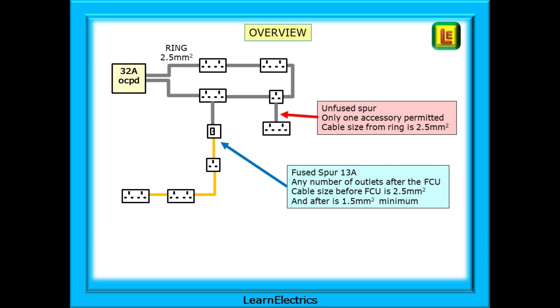Let's have a quick overview of what we've done so far in this video. In our example, a 30 or 32 amp ring circuit should be wired in 2.5 by 1.5 twin and earth. From each accessory that is actually on the ring, we can take an unfused spur to one spurred accessory and one only. The cable size from the ring to the spurred accessory must be the same size as the cables forming the ring, in other words 2.5mm. If we use a fused connection unit, a fused spur at 13 amps, then we can have as many accessories as we need after the FCU. The cable from the ring to the FCU must be 2.5mm, and after the FCU we can, if we wish, reduce the cable size to 1.5mm.